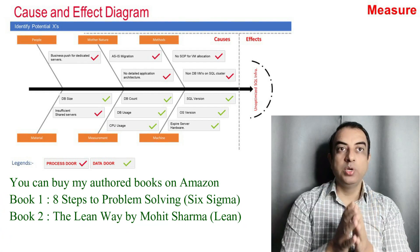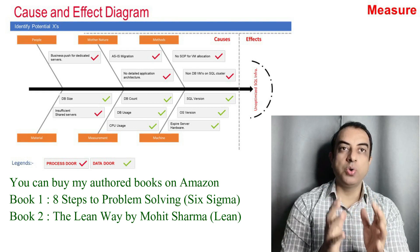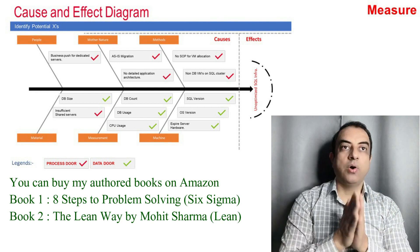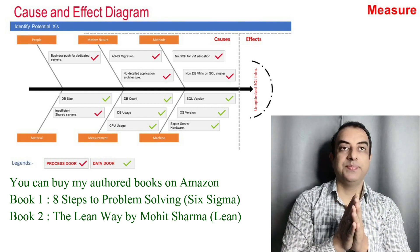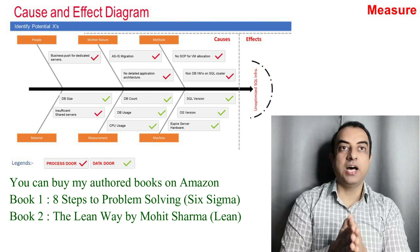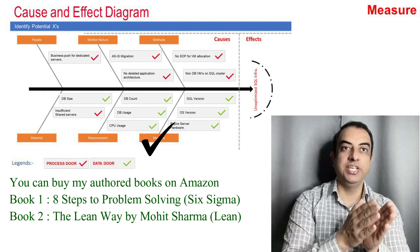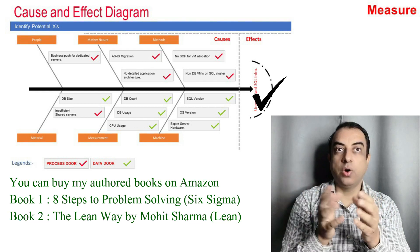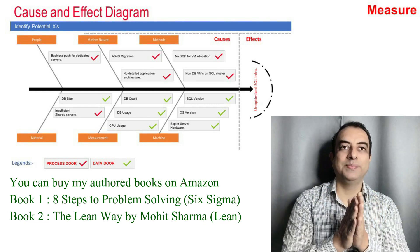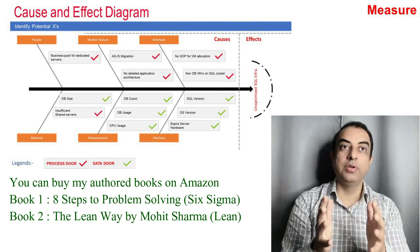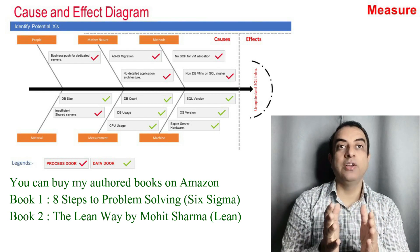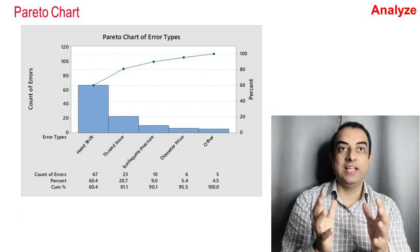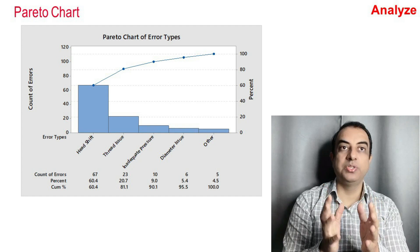Next is the Measure phase, and the basic Six Sigma tool here is the Fishbone Diagram. With the help of this tool, the team will be able to identify all root causes of the problem. The Fishbone has six heads under which all root causes are classified: People, Mother Nature, Method, Machine, Measurement, and Material. The head of the fish is the effect or problem on which brainstorming is to be done. I will provide the link to my video on Fishbone in the description box below.